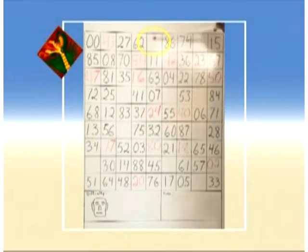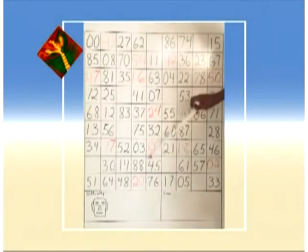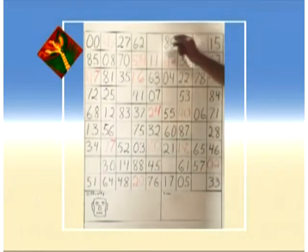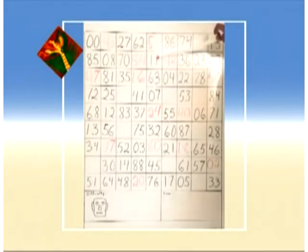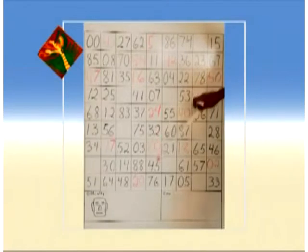Now we can go up and down this column and we see on the left numbers we already have 1, 6, 0, 2, 3, 8, 4, 7. We are missing a 5. Now we go to the right number and we see we already have 1, 3, 7, 4, 2, 0, 5, and 6. We are missing an 8.